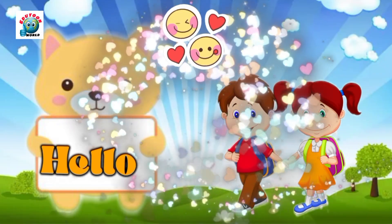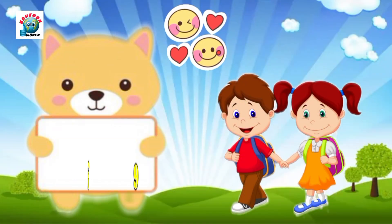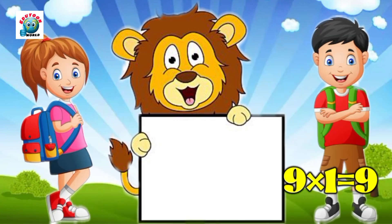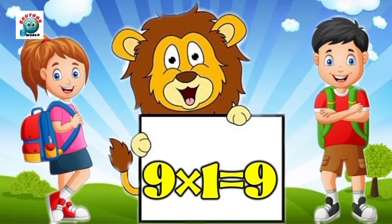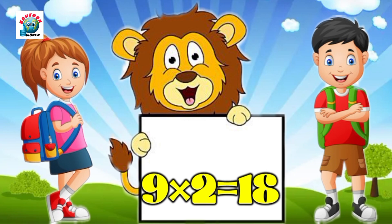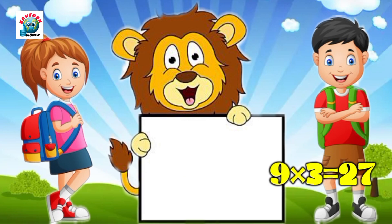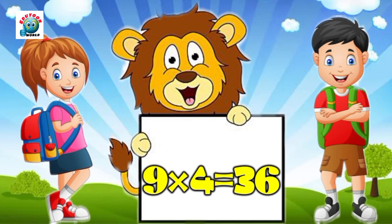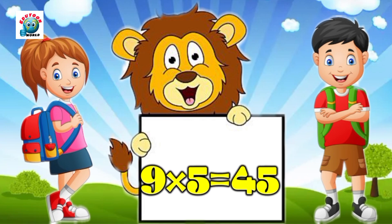Hello kids, today we will learn table of nine. Let's start. Nine ones are nine. Nine twos are eighteen. Nine threes are twenty-seven. Nine fours are thirty-six. Nine fives are forty-five.